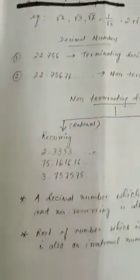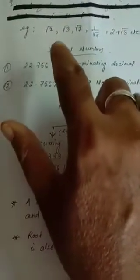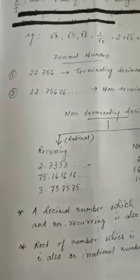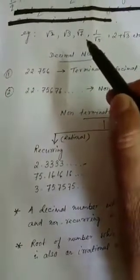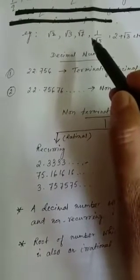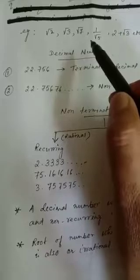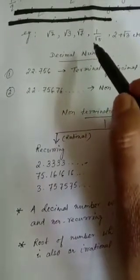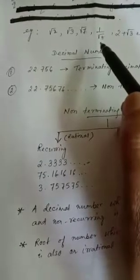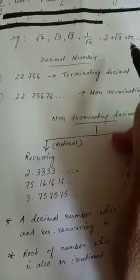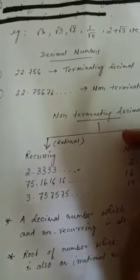Under irrational numbers, examples are: √2, √3, √7. Note that √4 is not irrational because √4 = 2, which is a rational number. However, 1/√5 and 2 + √3 are irrational numbers.